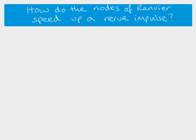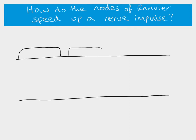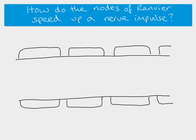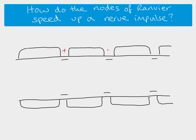That's how the action potential travels down the axon — now let's look at saltatory conduction. In a myelinated neuron, the myelin is wrapped all the way around, and in between the myelin are small gaps called nodes of Ranvier — areas of the axon which are unmyelinated and have no myelin. This speeds up the impulse, because you can only get an influx of sodium ions at these nodes — the myelinated sections are insulated with no voltage-gated ion channels, so there can be no movement of ions in or out there.